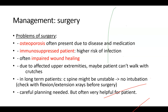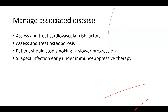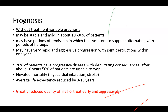You also need to manage associated diseases. Cardiovascular risk factors should be monitored. Assess and treat osteoporosis. Patients should stop smoking, which has been shown to lead to slower disease progression. And always suspect infection early when the patient is on immunosuppressive therapy — always have a high index of suspicion.